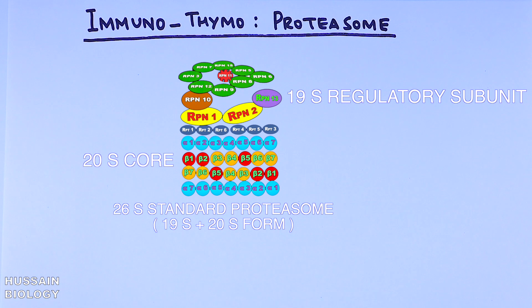The 20s core shown in the diagram has two beta subunits that are sandwiched between two alpha subunits. Now in order to get the immunoproteosome and thymoproteosome formation, we need some modifications in beta subunits.